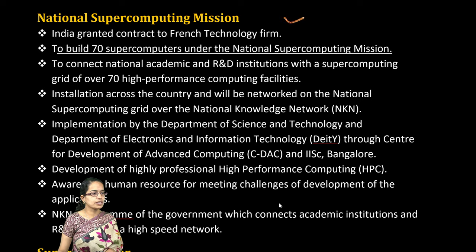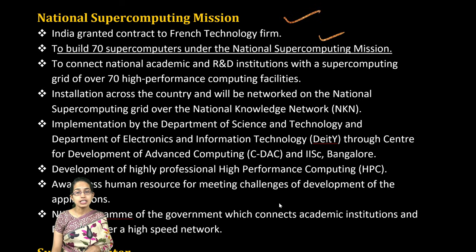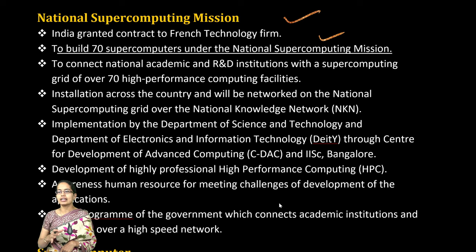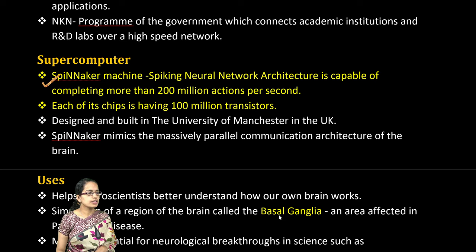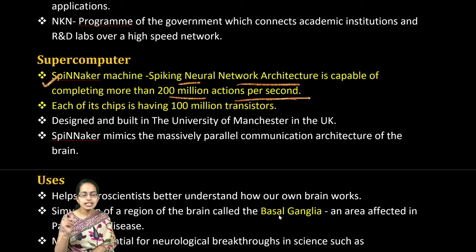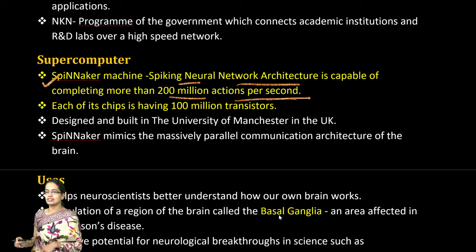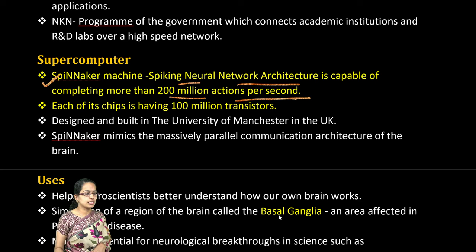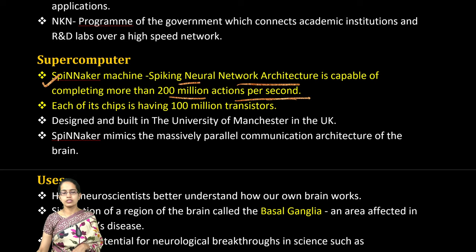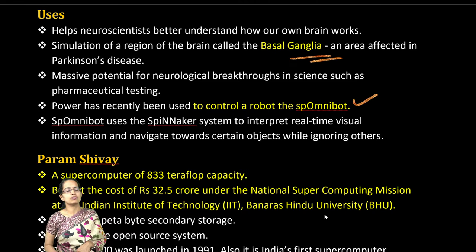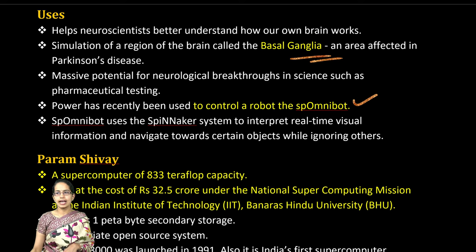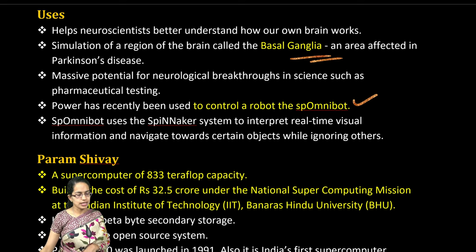The National Supercomputing Mission is India's initiative to build 70 supercomputers for academics, R&D, innovation, science, and technology. The SpiNNaker machine is a spiking neural network architecture that can complete nearly 200 million actions per second, with each chip having nearly 100 million transistors. It can be used to control a robot called a SpawnBot, and for simulations of basal ganglia — the brain area affected in Parkinson's disease.